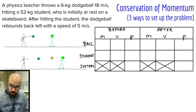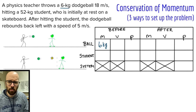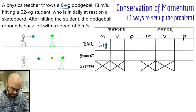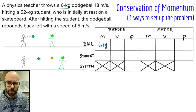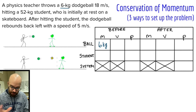This says a physics teacher throws a six kilogram dodgeball. A six kilogram dodgeball? Holy cow, that's more than 12 pounds — that's like a bowling ball. This physics teacher threw a bowling ball? Whoever wrote this problem — I feel really bad for the student. That physics teacher probably needs to get fired. Okay, six kilogram dodgeball, we're just going to go with it.